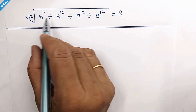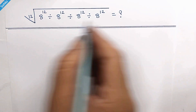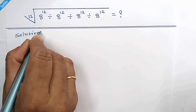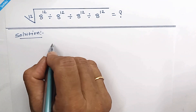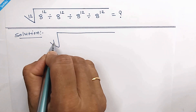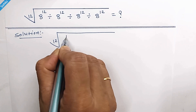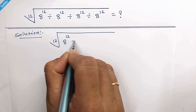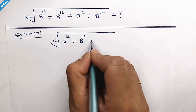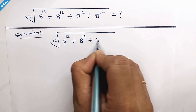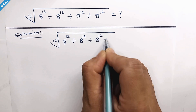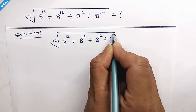Hello everyone, let's simplify this question. The question is the 12th root of 8 to the power 12 divided by 8 to the power 12, divided by 8 to the power 12, divided by 8 to the power 12.